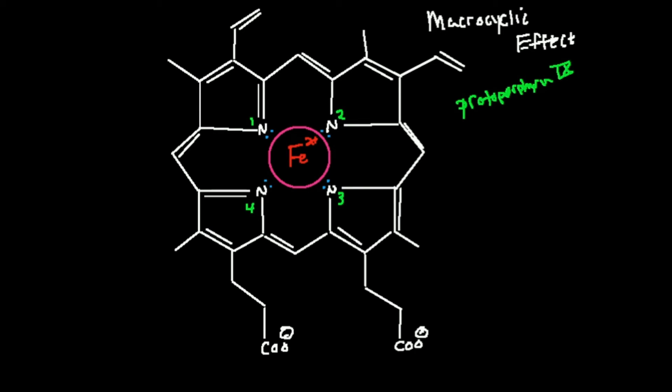So with the macrocyclic effect, you have multiple things at play. You have multiple donor atoms. That's number one. That's just the chelate effect. You have multiple donor atoms. You have a rigid ring structure, thus the name cyclic, macrocyclic, a rigid ring structure that has the donor atoms. And then generally, you have limited specificity for the metal ion.